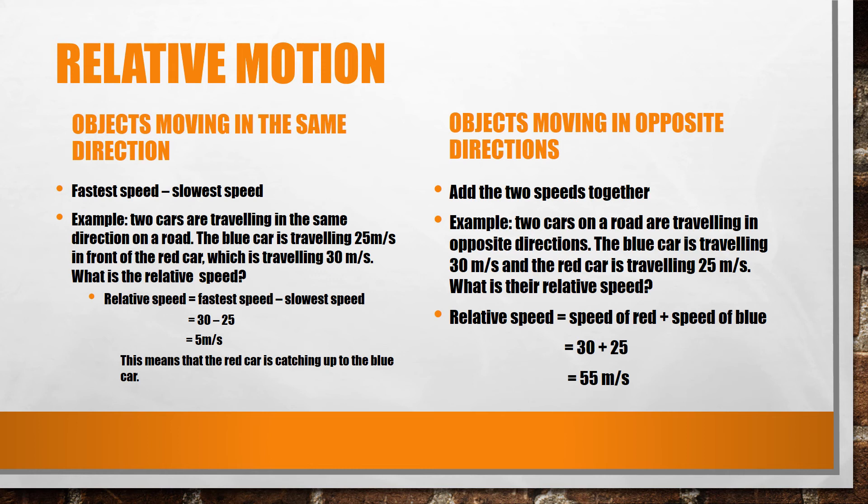If the two objects are moving in opposite directions, we add the two speeds together. If two cars were traveling in opposite directions, the blue car traveling 30 meters per second, and the red car traveling at 25 meters per second, we can find the relative speed by adding our 30 plus our 25. This gives us 55 meters per second.